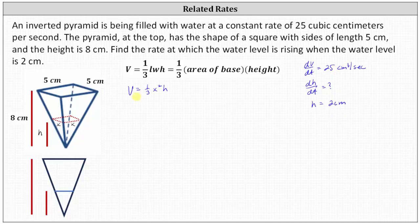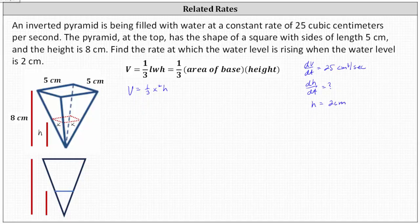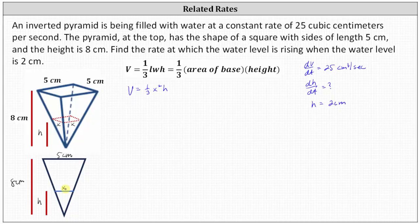Going back to our volume formula, we need to write it in terms of just h, not x and h. We can do this by looking directly from the side of the pyramid, where we'll see two similar triangles. The height of the large triangle is eight centimeters, the height of the small triangle at the bottom is h centimeters, the width of the top is five centimeters, and the corresponding width of the water base is x.